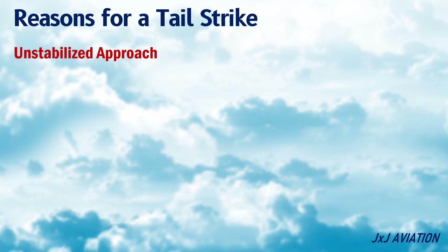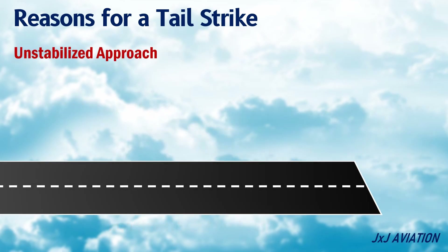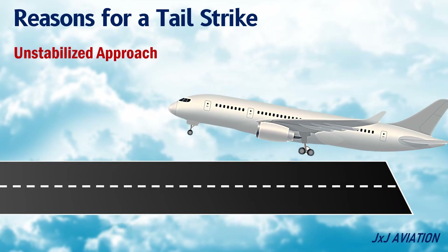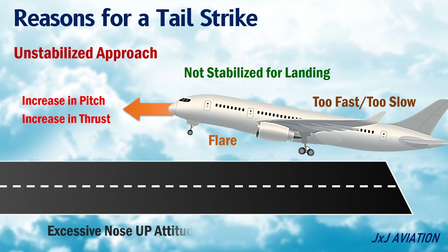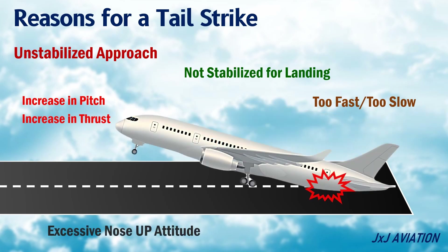Unstabilized approach: if the aircraft is not stabilized during the approach for landing, it may lead to a tail strike. As a result, the aircraft may be too fast or too slow during the flare, which will lead to an increase in pitch or increase in thrust. This will result in an excessive nose-up attitude near the ground, causing a tail strike.